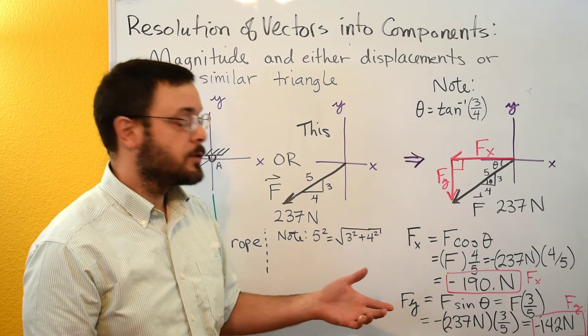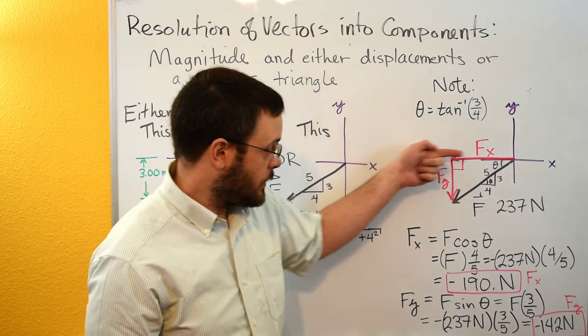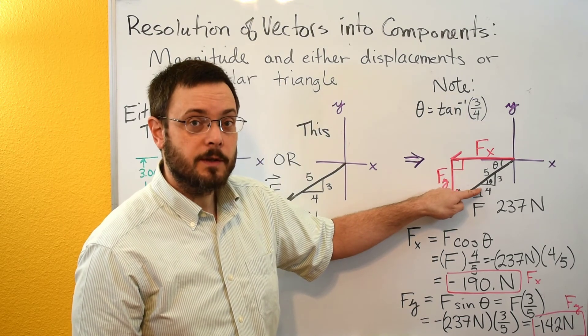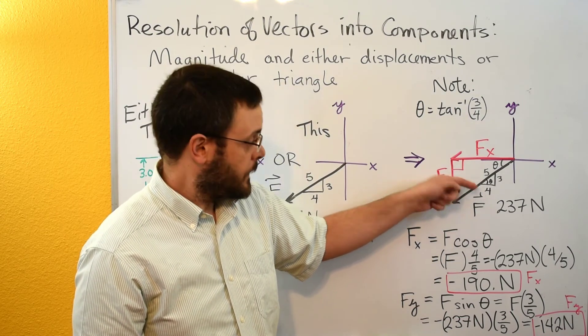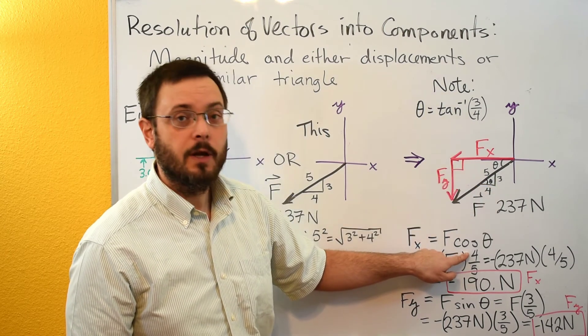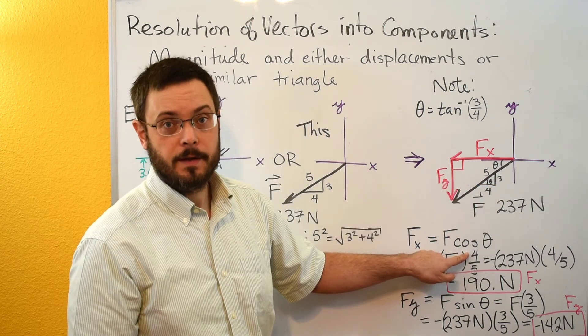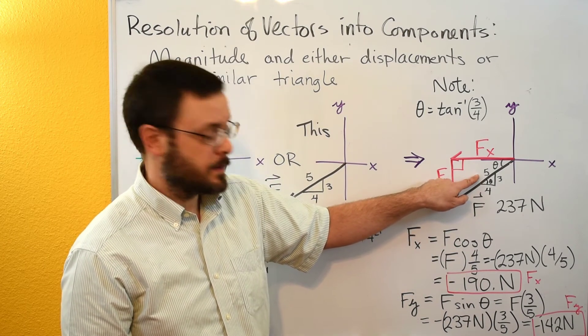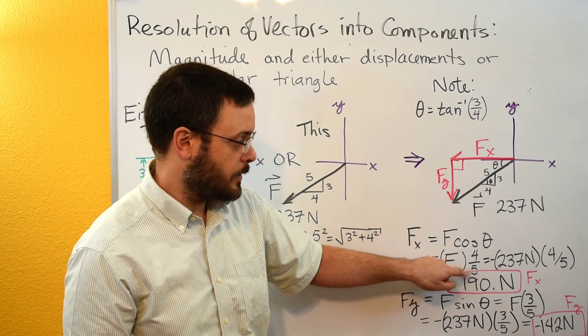The other way that you may want to think about it is that if this is your x side, look at your similar triangle and see which side's parallel to x. It's your 4 side that's parallel to x, so in your fraction, you're going to have the 4 side on top in the numerator, and then you always have the hypotenuse in the denominator or down under.